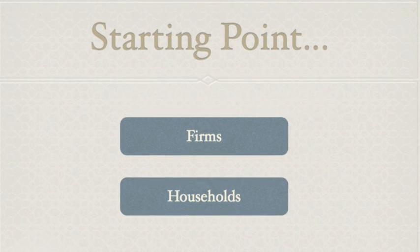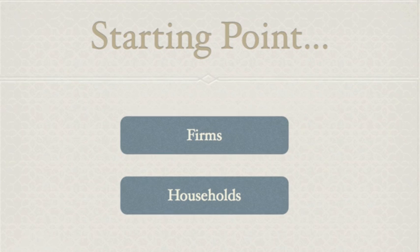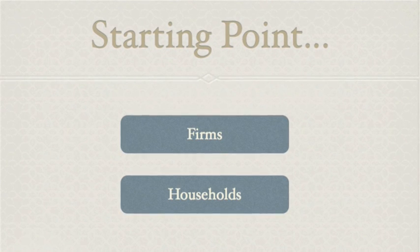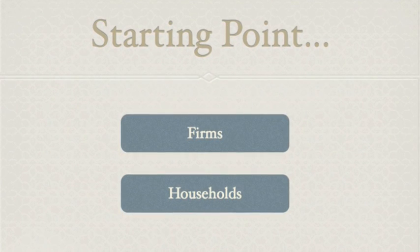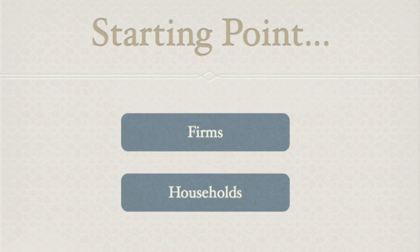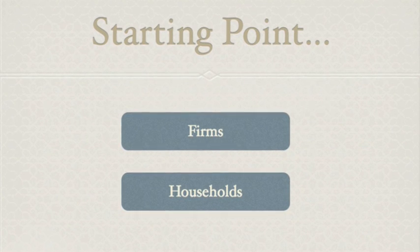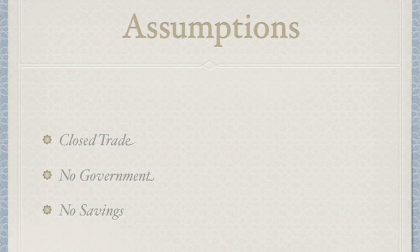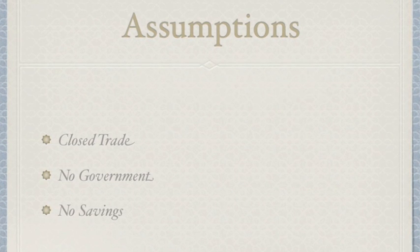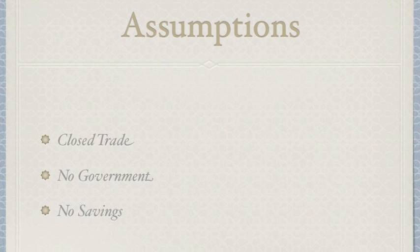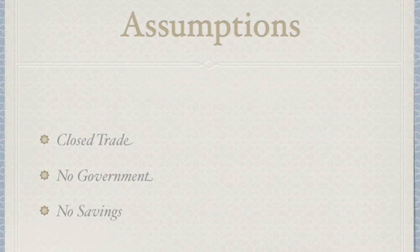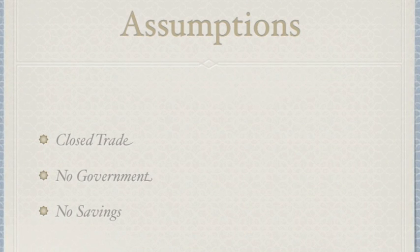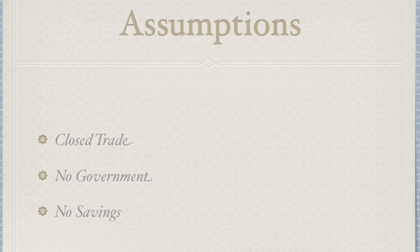Before we go on, you may be wondering: what about the government, or other countries we trade with? They are all valid economic agents, but the whole point of economics is to formulate simple models which allow us to experiment. The Circular Flow of Income model is based on three assumptions: 1) the economy operates with closed trade, meaning no international trade exists; 2) no government exists; and 3) no economic agent saves any money — all money received is spent.